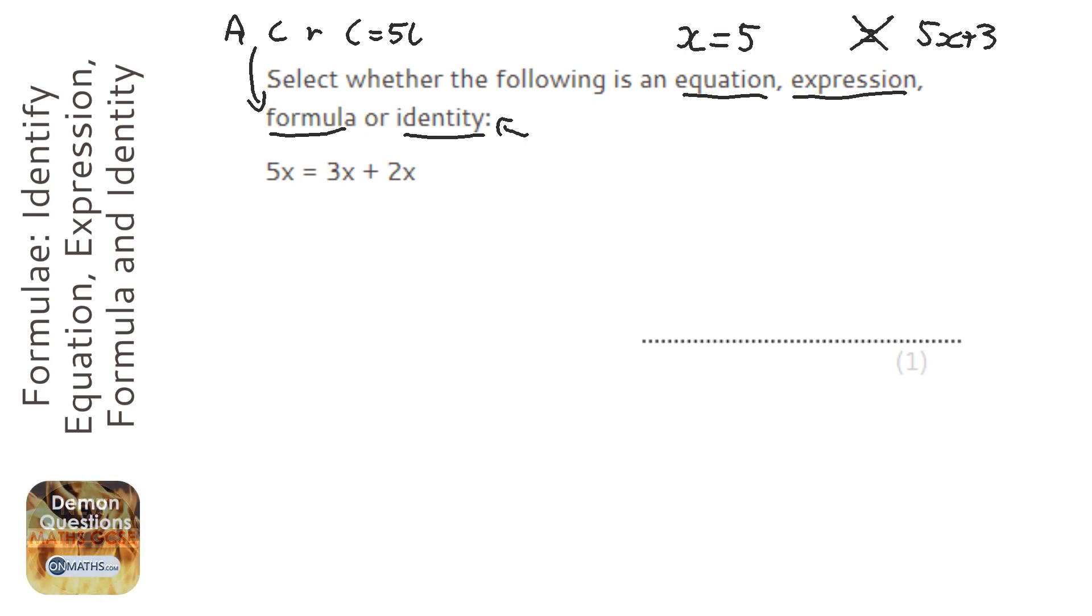Identity is a really strange one, where it just works for every value of something. So if you've got x plus x equals 2x, that works for all values of x. So there's no finite amount of x's that works with.